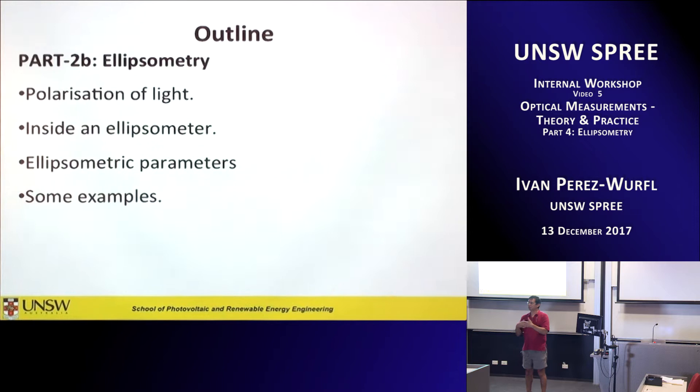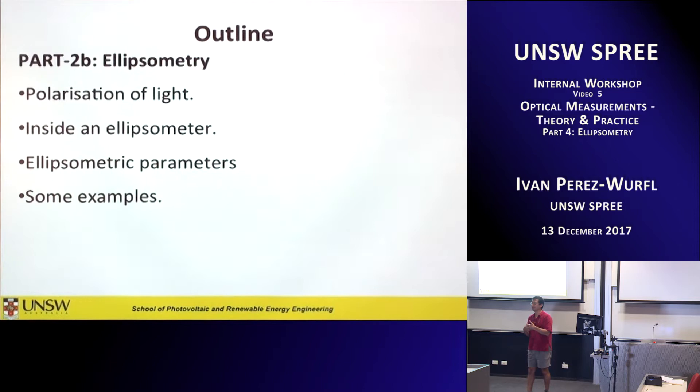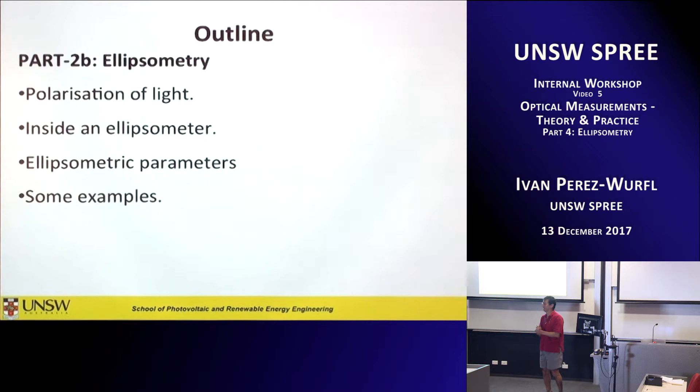Before we go into that, I wanted to introduce ellipsometry, which is a method for us to characterize films. It is actually more reliable than R and T because it's not a relative measurement, but rather it is a ratio. So it calibrates itself out whenever you're doing the measurement.